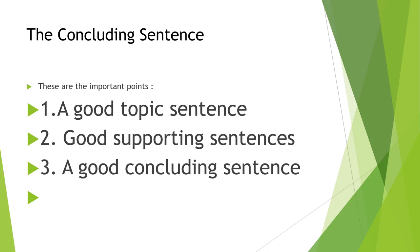There are three important points to remember. A good topic sentence is a complete sentence with a subject, a verb, and a controlling idea. It is neither too general nor too specific. It clearly states the main idea of the paragraph but does not include specific details, and it is usually the first sentence in the paragraph. Good supporting sentences explain or prove the topic sentence; they are specific and factual, and can be examples, statistics, or quotations. A good concluding sentence signals the end of the paragraph and summarizes the important points briefly or restates the topic sentence in different words.